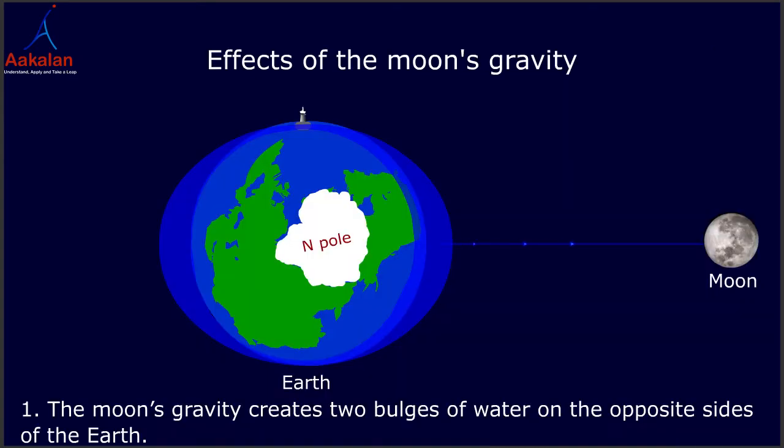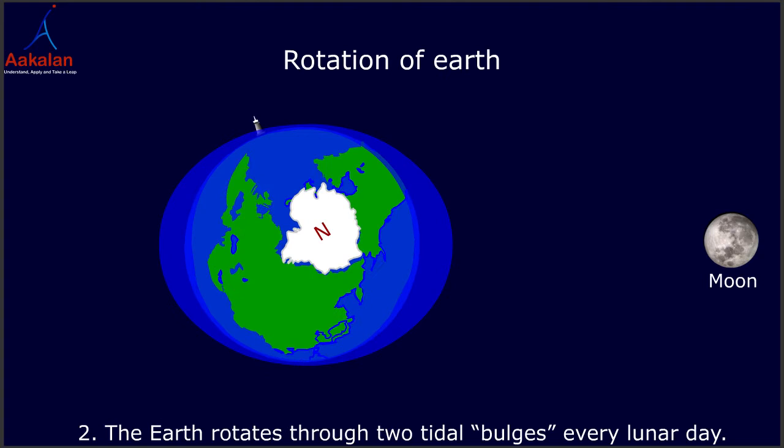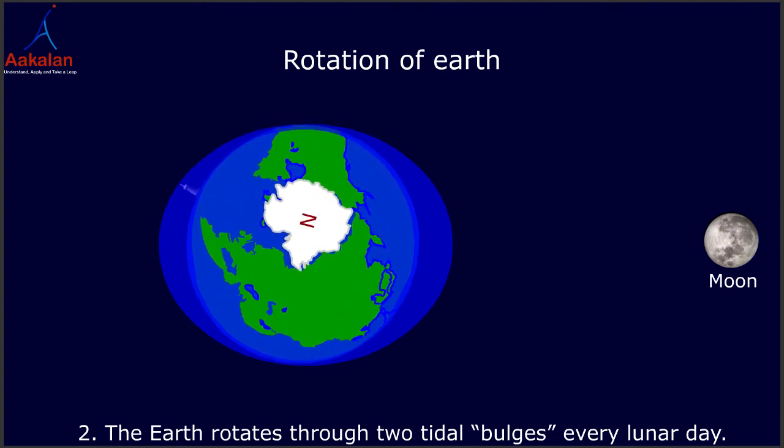As it is known, the moon's gravity creates two bulges of water on the opposite sides of the Earth, and the Earth rotates through two tidal bulges every lunar day.